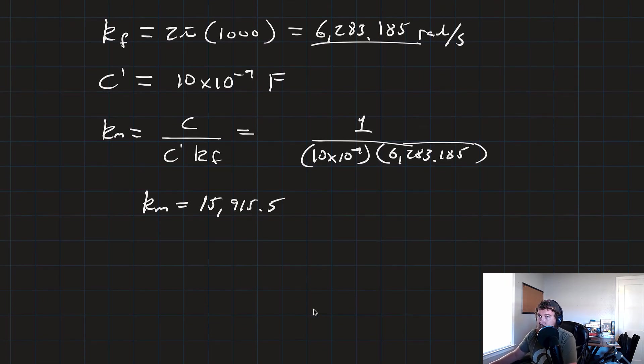Now, we can use Km to find our resistance values. And the way we're going to do that is R2 is just equal to Km times our original R, which was equal to that big old number, 15,915.5, times 1 ohm.